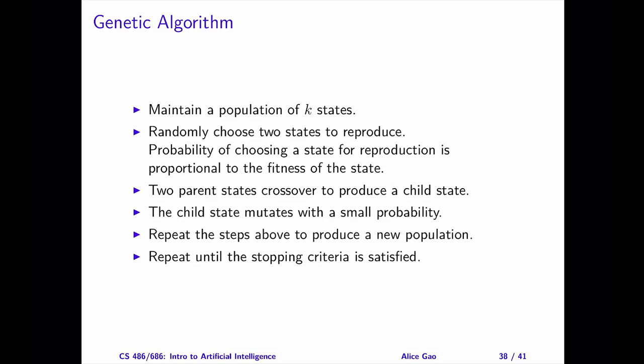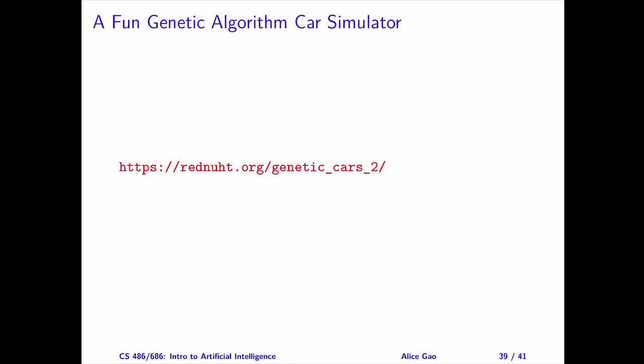This process repeats until some stopping criteria are satisfied. One stopping criterion could be that at least one state in the population has a fitness greater than some desired threshold value. Another could be a maximum number of iterations or generations. Check out the example of executing the genetic algorithm on the eight queens problem in a separate PDF file. If you have some time, check out this genetic algorithm car simulator, which uses a simple genetic algorithm to evolve random two-wheeled shapes into cars over generations — it is quite entertaining to watch.